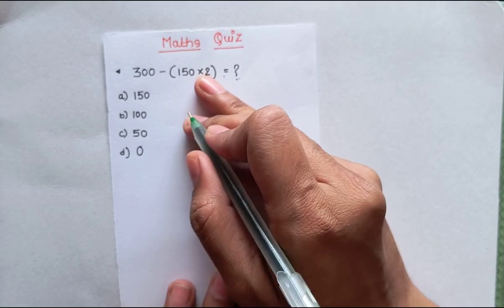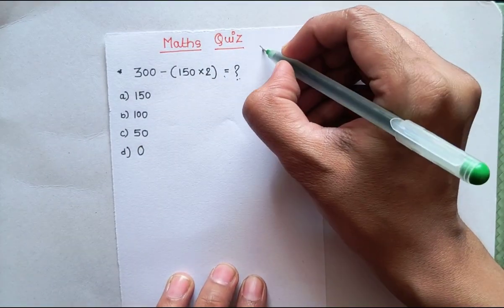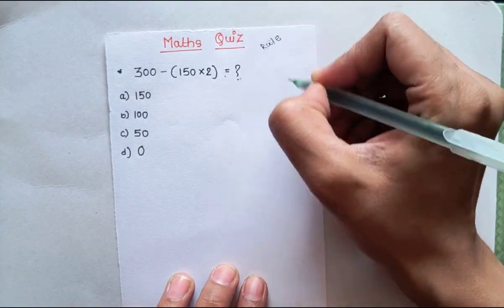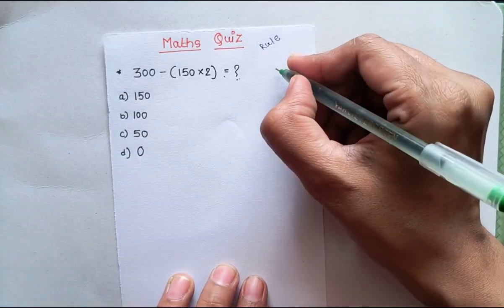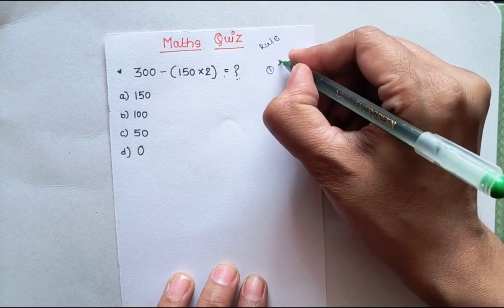The rule is: whenever that situation arises, first we will do division, second we will do multiplication, then the addition.